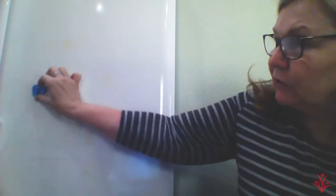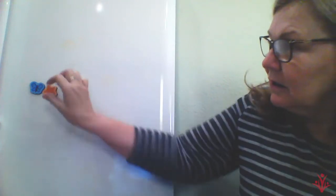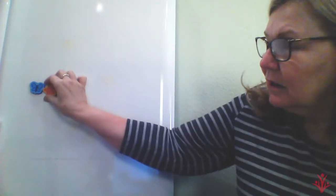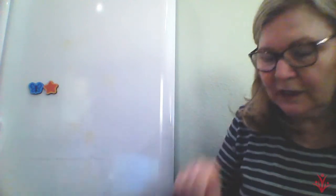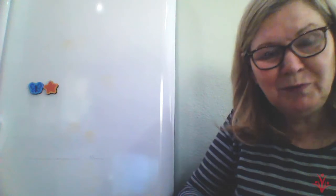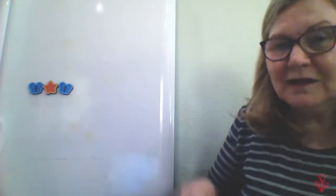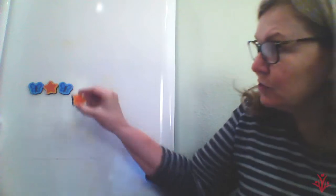First, I'm going to start with a butterfly and then a star. So I've got a blue butterfly and an orange star. What do you think comes next? Because we're going to repeat it. Did you say blue butterfly? You are right. And then what's next? Did you say an orange star? You are correct.